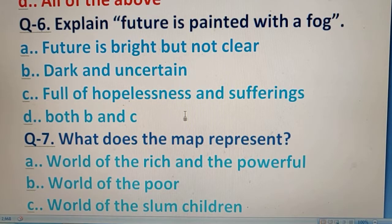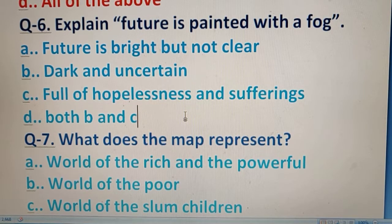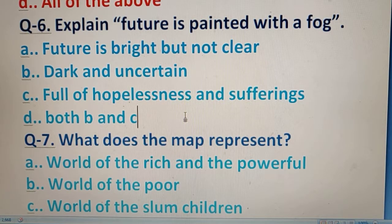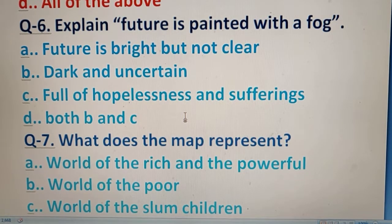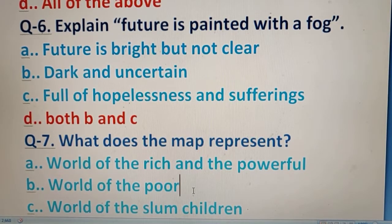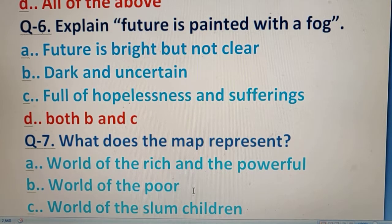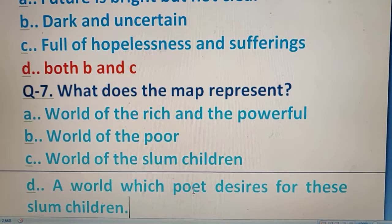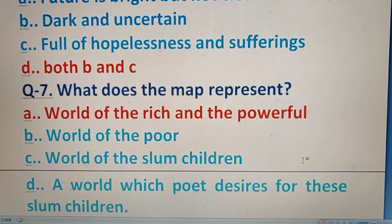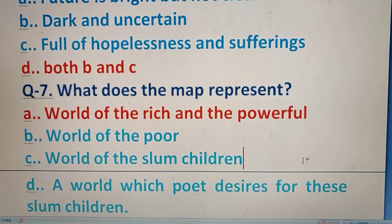The next question: Explain 'future is painted with a fog.' Your options are provided, and the right answer is both B and C. Moving to question number 7: What does the map represent? The right answer is: the world of the rich and the powerful.